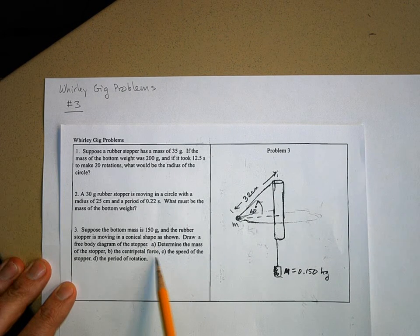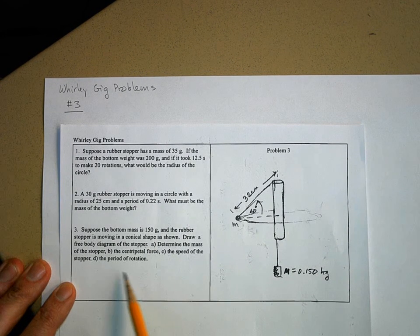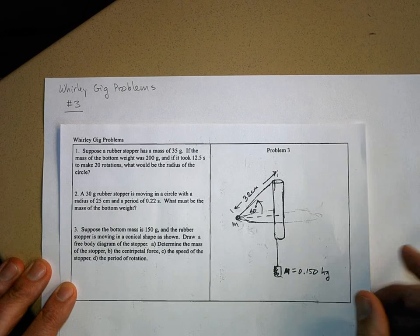Part A, determine the mass of the stopper. Part B, the centripetal force. Part C, the speed of the stopper. And part D, the period of rotation.